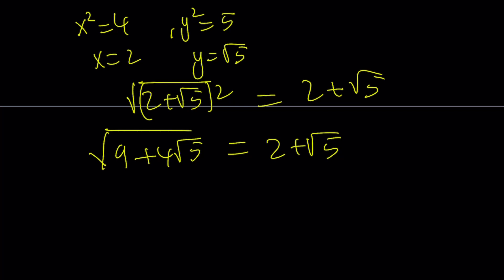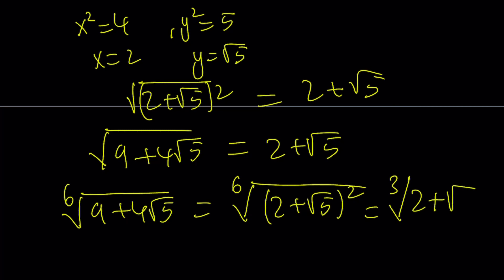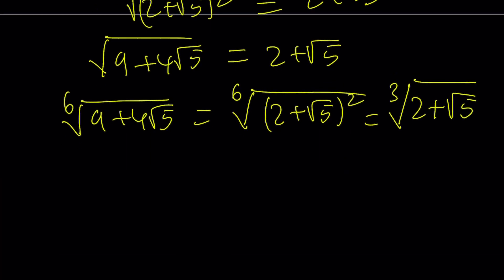Now, we got that, but we do need the sixth root of our expression, not just the square root. But that can be handled, since we know that 9 plus 4 root 5 can be written as 2 plus root 5 squared. The square and the sixth root kind of cancel each other out, and we can write this as the cube root of 2 plus root 5. So, the next question is, how do I simplify this, right?